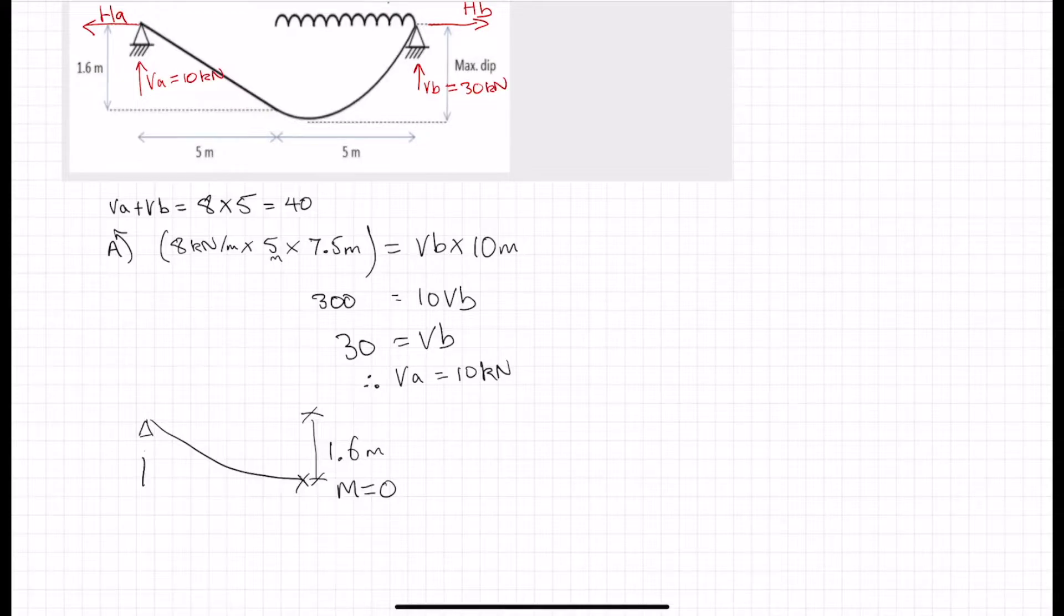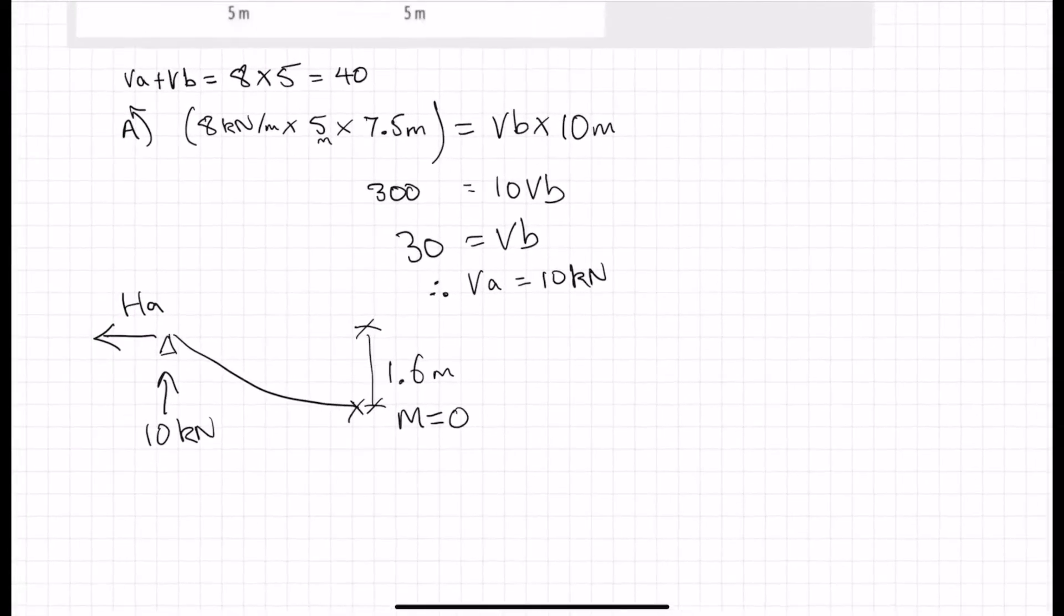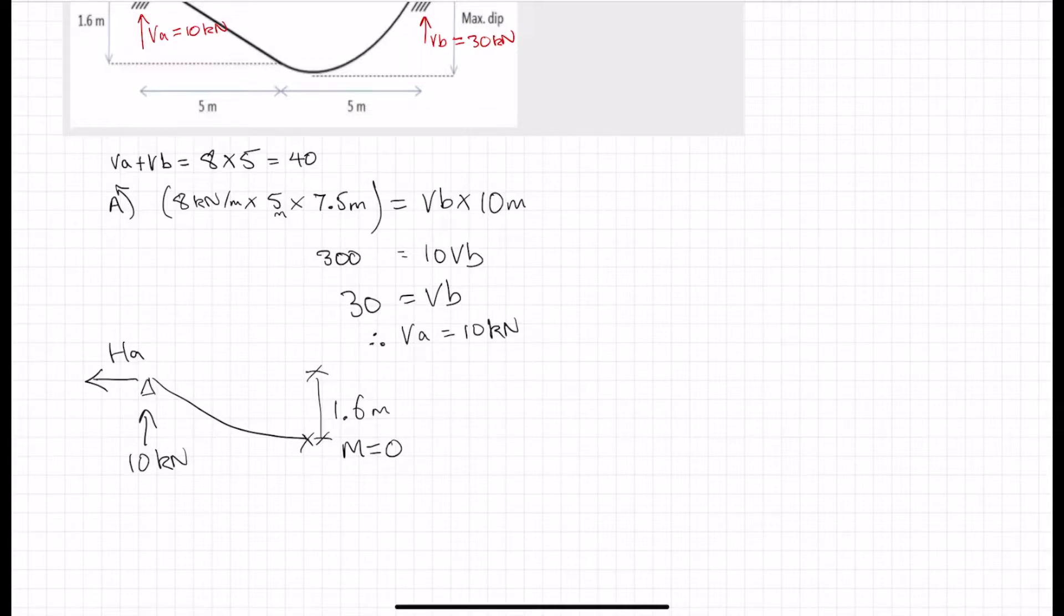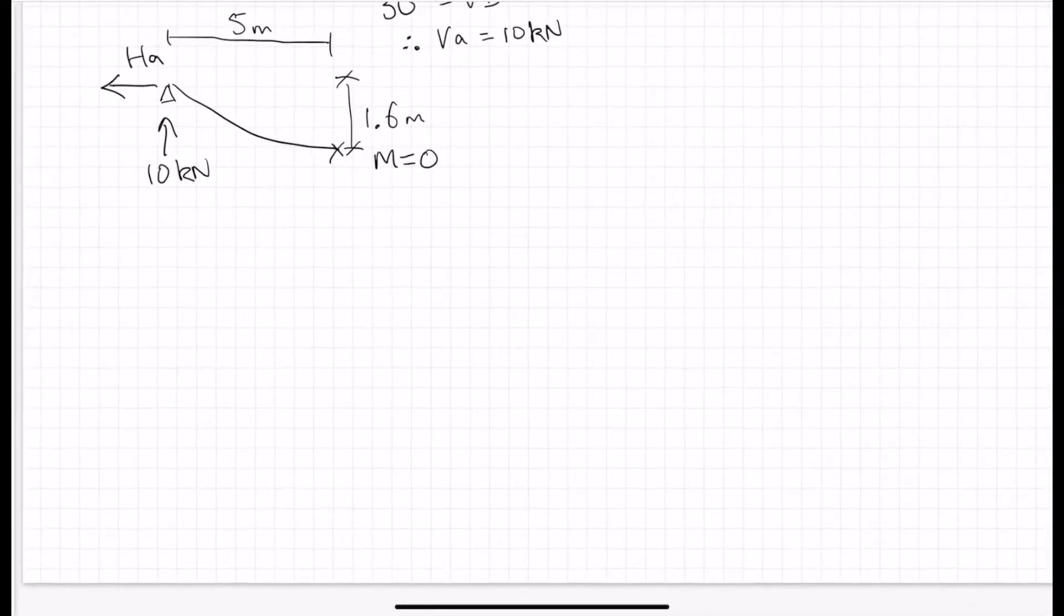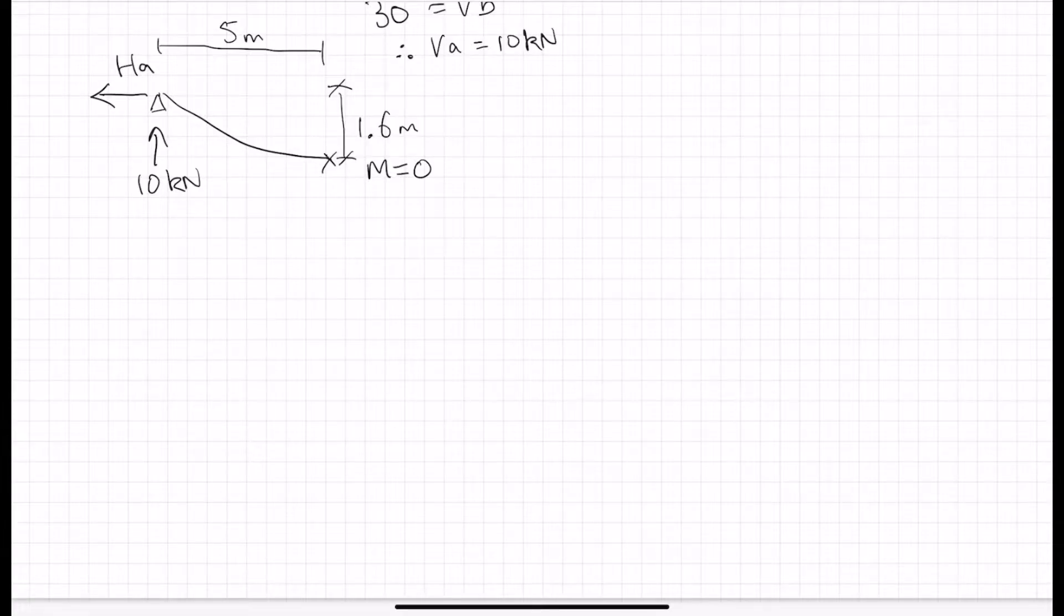We've got 10 kilonewtons there, and we've got some horizontal force there. And that distance is 5 meters. So this is actually the mid-span of that cable. And these are the only two forces, both reaction forces. There's no applied forces. We've got clockwise, we've got 10 kilonewtons times 5 meters is equal to 1.6 meters times HA. So HA is going to be 50 divided by 1.6, and that is equal to 31.25 kilonewtons.